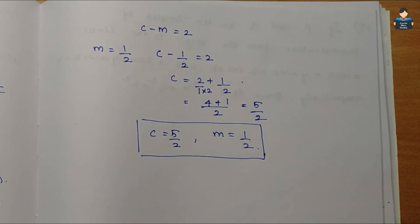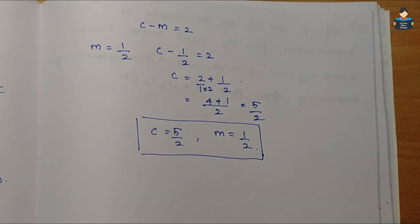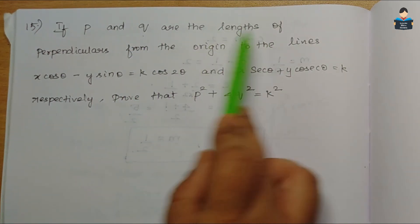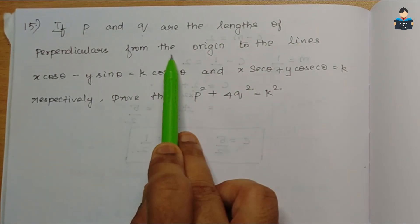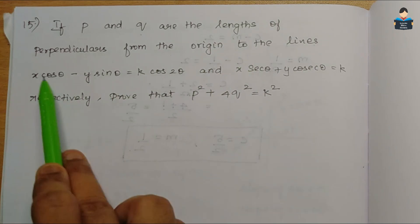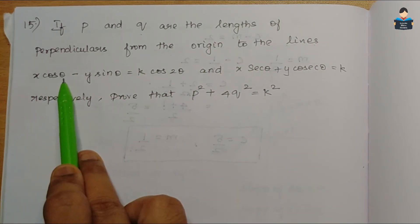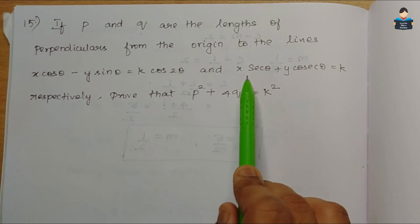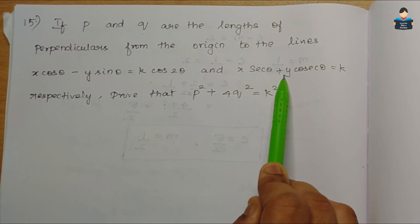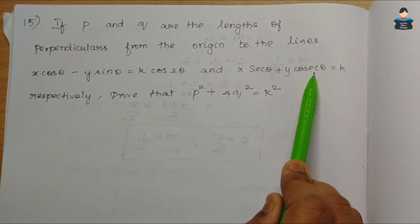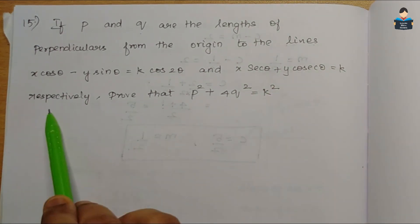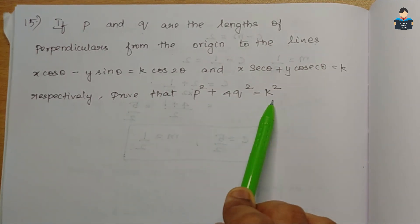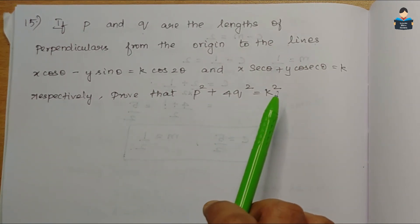Next is the 15th question. If p and q are the lengths of the perpendiculars from the origin to the lines x cosθ - y sinθ = k cos2θ and x secθ + y cosecθ = k respectively, prove that p² + 4q² = k².